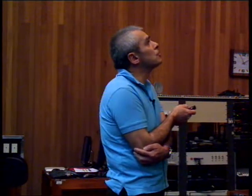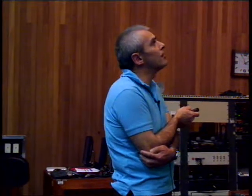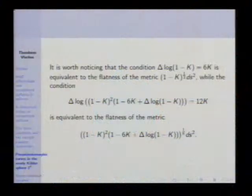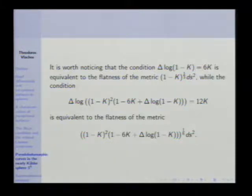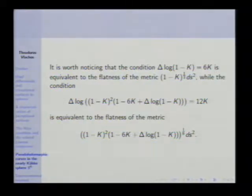A remark: the condition for type 2 is actually equivalent to the flatness of a certain metric, while the more involved condition for type 3 is equivalent to the flatness of another metric. So somehow these two types are each characterized by a Ricci-type condition.